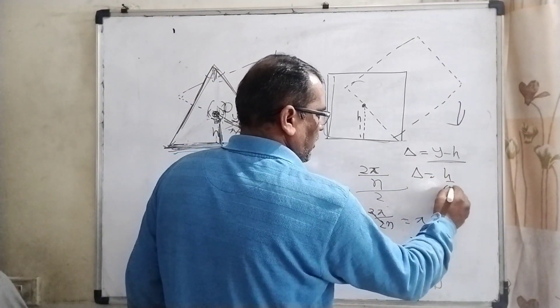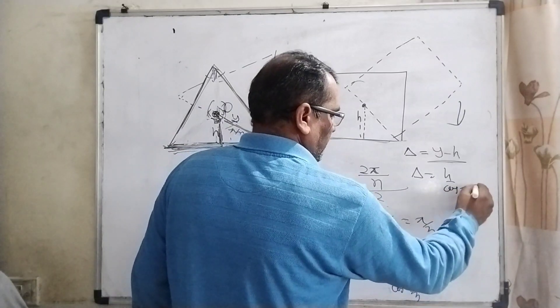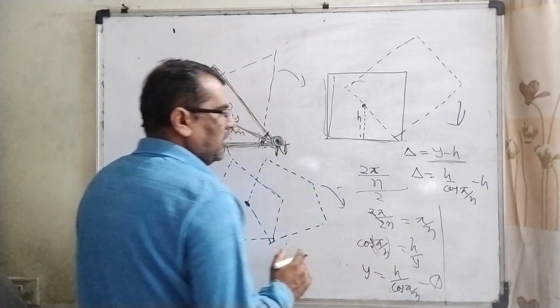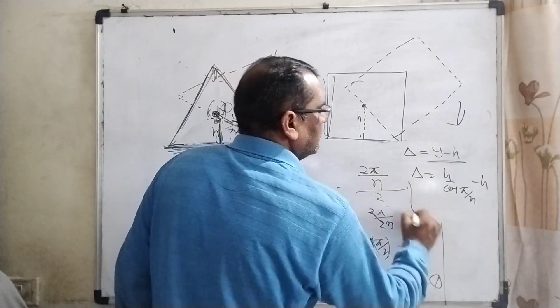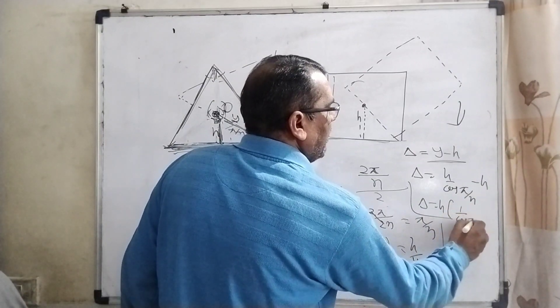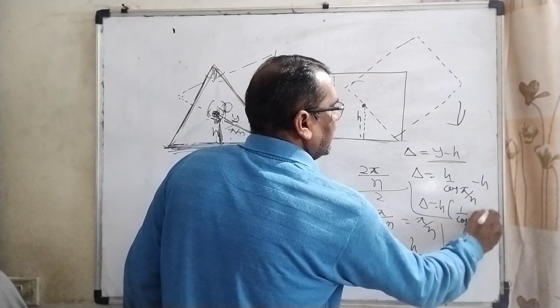And h will get common - h gets common - then the formula becomes 1/cos(π/n) - 1. This is the correct answer.